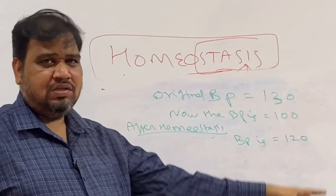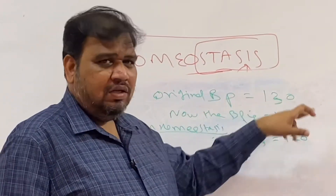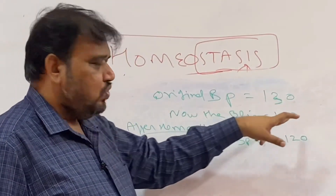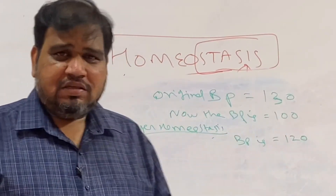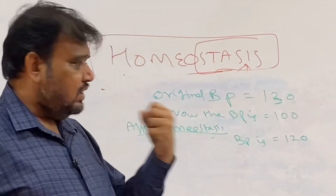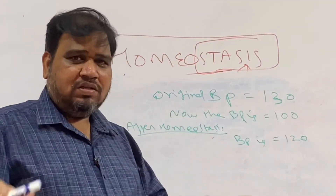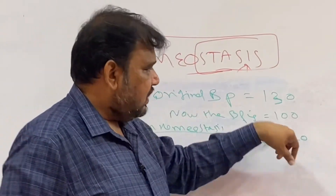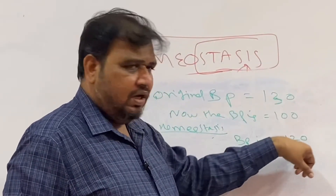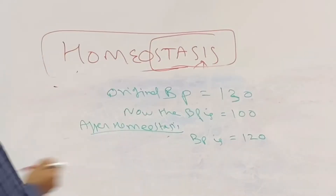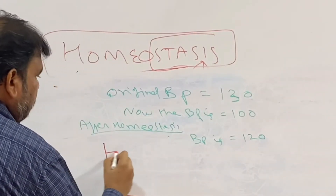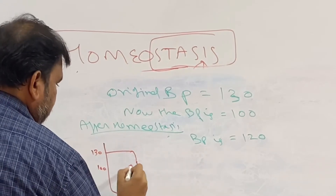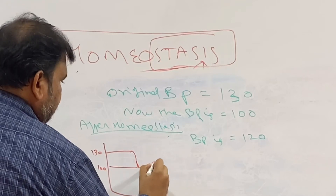This is an example of homeostasis — specifically negative feedback. The actual BP was 130. Because of some disturbance, such as fasting or similar, the BP decreased to 100. Once the BP decreased, the sensor — the set point — sensed it; the baroreceptors were inactivated. After homeostasis, the BP tried to return to normal but came back only to 120. So the BP went from 130, dropped to 100, and then returned to 120.